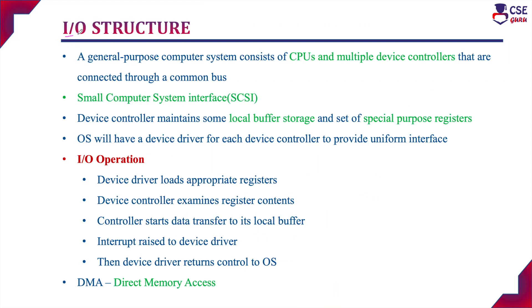IO is nothing but the input-output structure of a computer. Considering the storage part, it is one of many types of devices within the computer. A general purpose computer system consists of CPUs and multiple device controllers. For every device, it will have a device controller. For example, disk will have a device controller, input-output devices will have a USB controller, and monitors will have a graphics adapter.